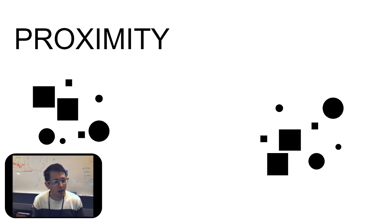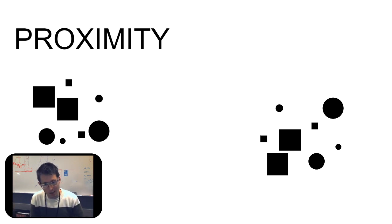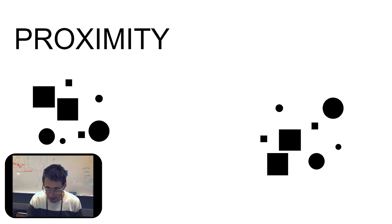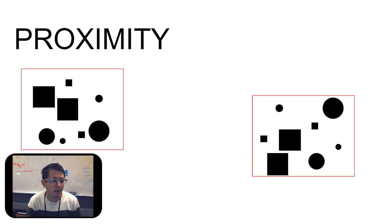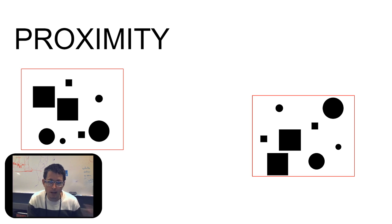Proximity is another one. We have squares and circles here, we have big shapes and little shapes, but we don't really care about that. We care about how close together they are. Somehow we group these all together, including this webcam picture. Although squares are a common denominator between these two groups, we don't see the squares, we don't see the circles — we see proximity.